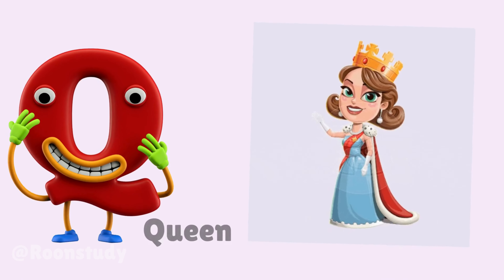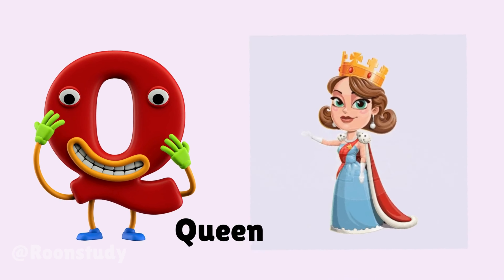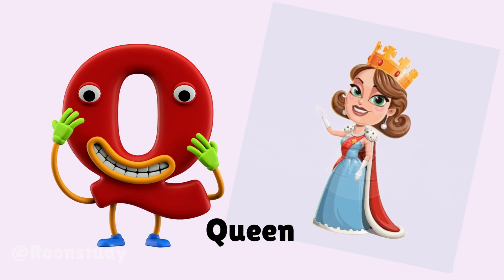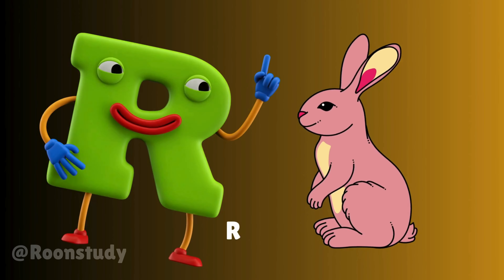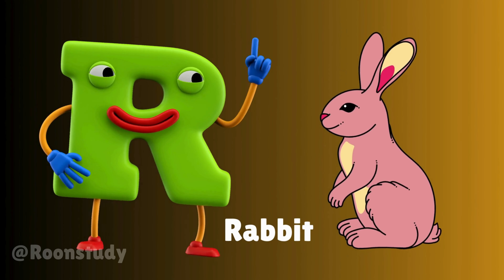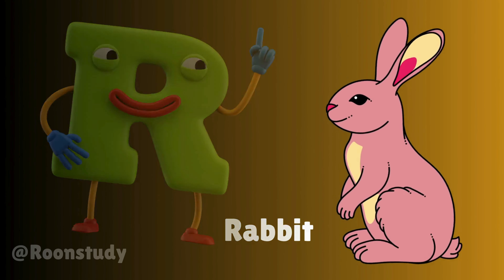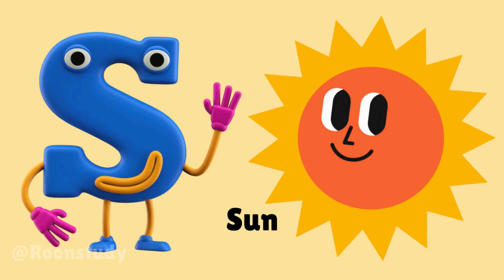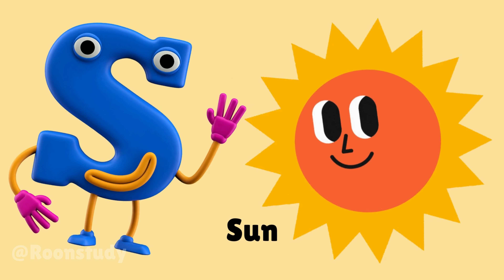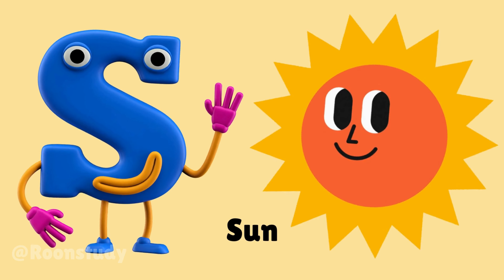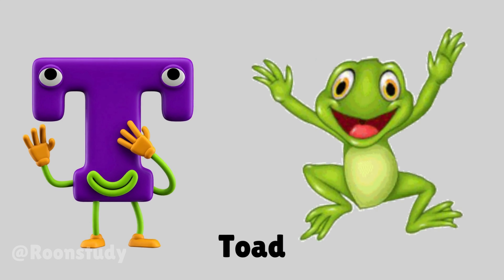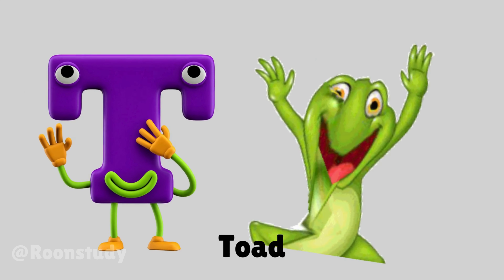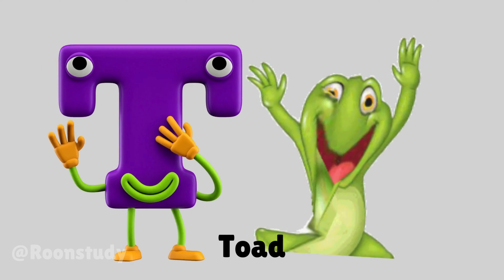Q is for queen, q-q-queen. R is for rabbit, r-r-rabbit. S is for sun, s-s-sun. T is for toad, t-t-toad.